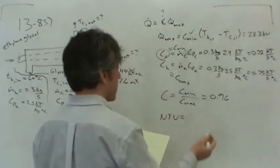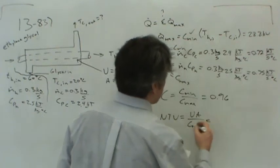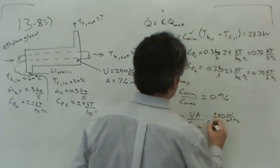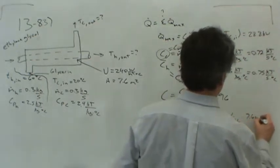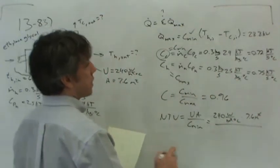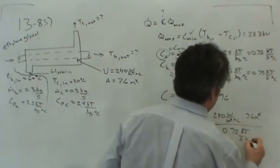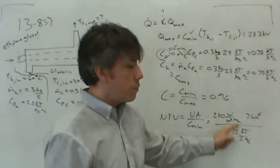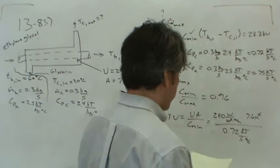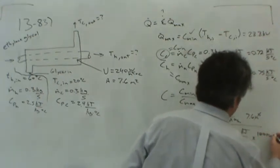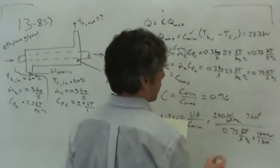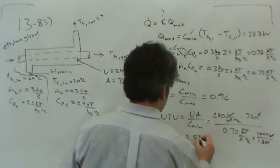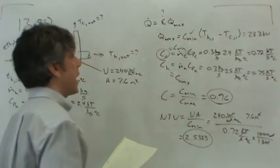The number of transfer units we can also calculate because it's just U·A over C_min. U, the overall heat transfer coefficient, was 240 watts per square meter per degree Celsius, and A was 7.6 square meters. The minimum capacity rate is 0.72 kilojoules per second per degree Celsius. Since a kilojoule per second is a kilowatt, we need a conversion factor of 1000 watts per kilowatt so the units cancel properly. The number of transfer units comes out to 2.5333 — dimensionless.